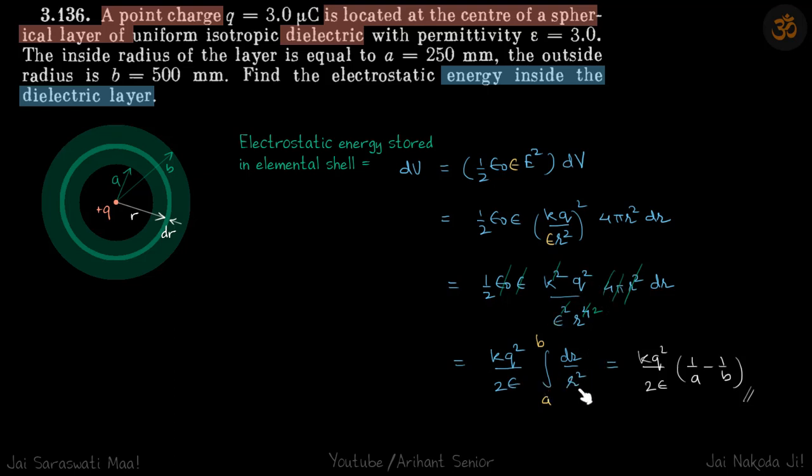Our answer will be kq squared by 2 epsilon times 1 by a minus 1 by b.